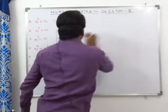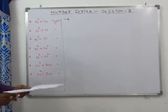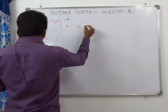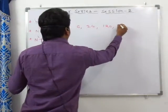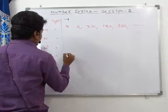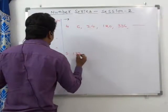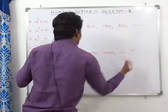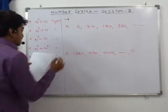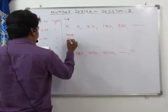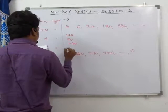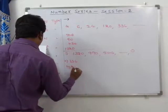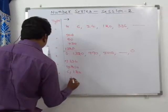Now we will see applications of the N³ - N type. Question number 4: the series is 6, 24, 120, 336 — what is the next number? Options are 336, 210, 120, and 60. And a separate series: 1320, 990, 504, missing number, 0 — options are 504, 90, 720, 30, 20.